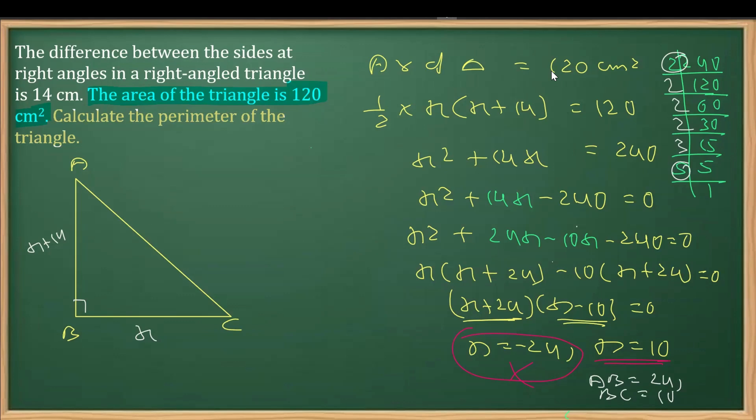So we know that square of the hypotenuse is equal to sum of the squares of other two sides. So AC square, AB is 24, so it's 24 square, and BC is x so it is 10 square. So AC square comes out to be, this is actually a Pythagorean triplet if you remember, 576 plus 100, that results to give you AC square as 676. So AC comes out to be 26, these are in centimeter.